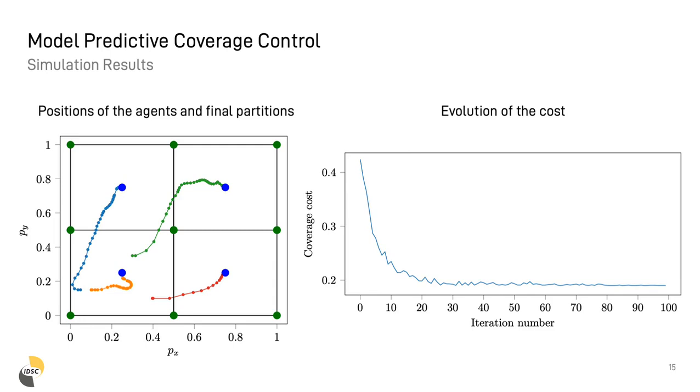I want to now show you some simulation results. In this example, we consider four agents with bicycle model dynamics, partitioning a square-shaped region with a uniform density function. In the plot on the left, you can see the trajectories of the agents and the final Voronoi partitions, while in the plot on the right, the evolution of the cost function over time. As we can see, the cost converges and the agents converge to a centroidal Voronoi configuration.